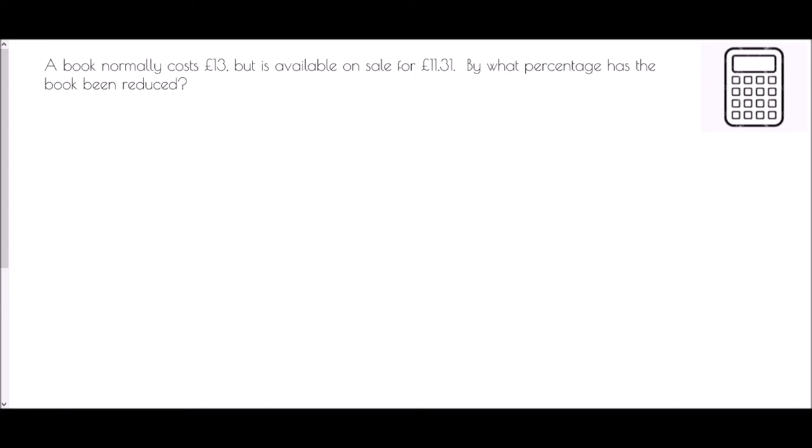Try it again with this one. A book normally costs £13 but is available on sale for £11.31. By what percentage has the book been reduced? Well in this case the first thing I'm actually going to do and given that it's a calculator I'm going to use the change which is 13 take away 11.31. I'm not even going to work that out because I've got a calculator to do that for me. But that is going to be divided by the original amount. So divided by 13 and then multiplied by 100.